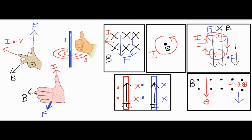For a negative particle, you can either use your right hand and flip your answer to the exact opposite direction, or do the problem with your left hand and avoid flipping. Sticking with the right hand: take the thumb and point it down on the screen, flip the fingertips so they're pointing out of the screen — the palm originally faces to the left. But since it's an electron or negatively charged particle, flip the answer, so the final answer is the opposite direction.